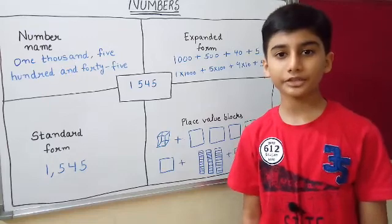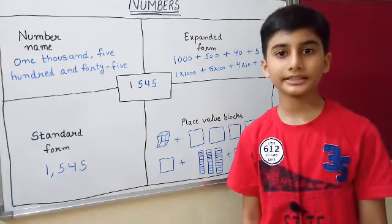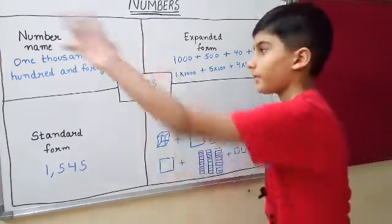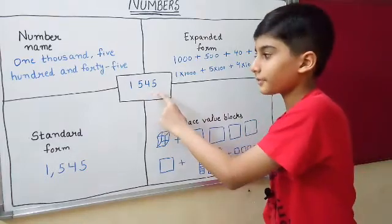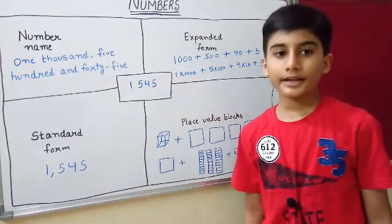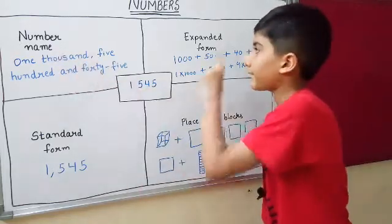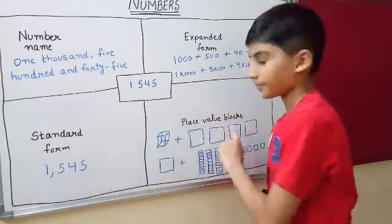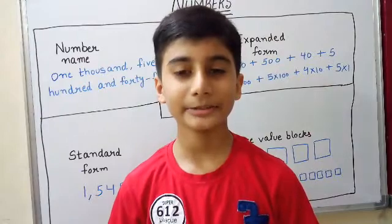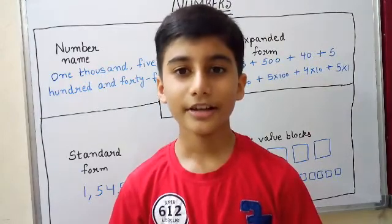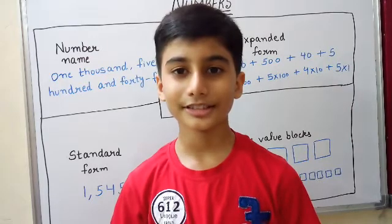Now I would like to tell you how you can practice at home on a daily basis. First, draw four blocks and in the middle write a four-digit number. Then write that number in different forms: number name, expanded form, standard form, and place value blocks. I hope this lucid explanation has made this concept clear to you all. Please subscribe and share with your friends for more amazing videos. Have a great day.